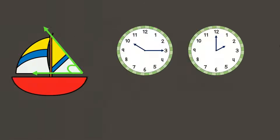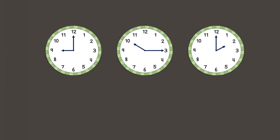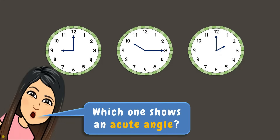Looking back at your clocks, which one shows an acute angle? If your answer is the third clock, you are correct — two o'clock shows an acute angle. Now let's go to the next one.